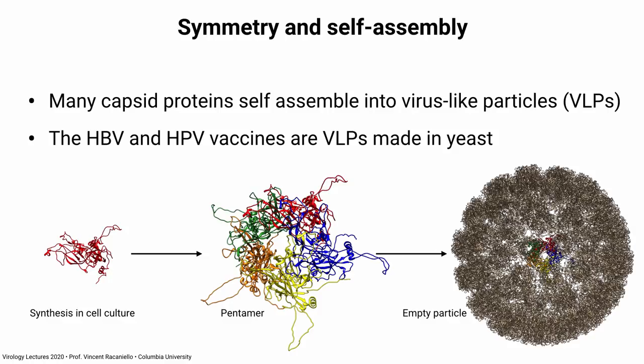Here's how it works. You take — first you have to know what viral protein is in the capsid — you then synthesize it in cell culture. In the case of papillomavirus, which is shown here, one subunit — the single folded polypeptide chain — five of those assemble into the structural unit, which is a pentamer. We call it that because there are five subunits making it up. And then those pentamers assemble to form the virus particle, shown on the right. This is an empty particle, non-infectious, completely without danger. And it's really important — it prevents cancer, as we will see.